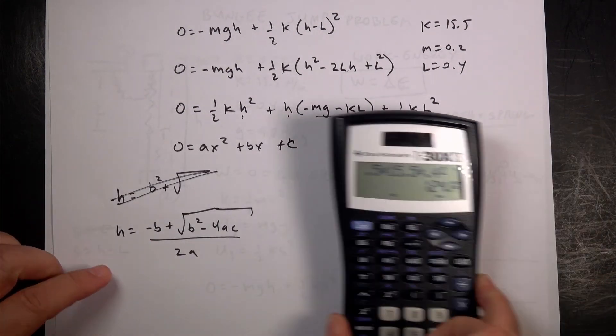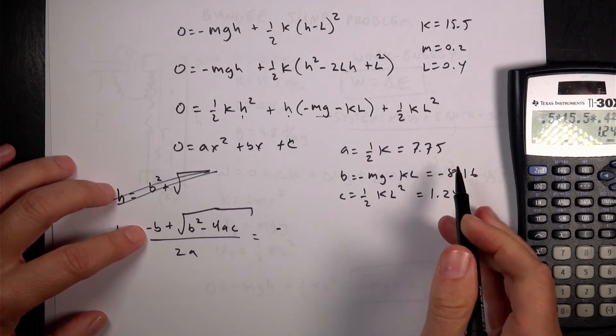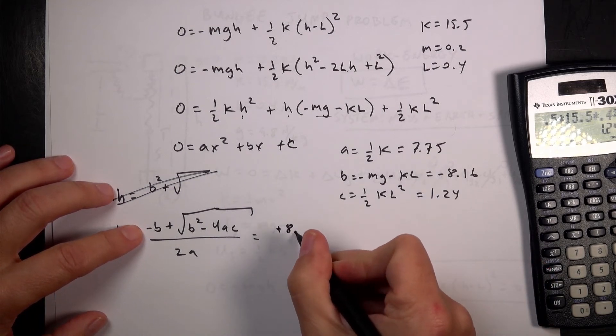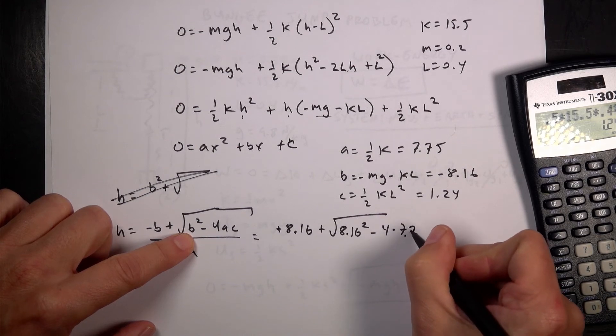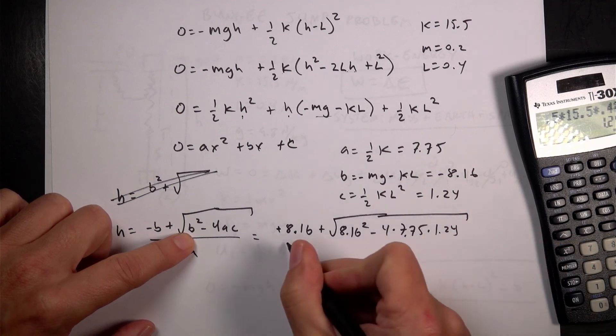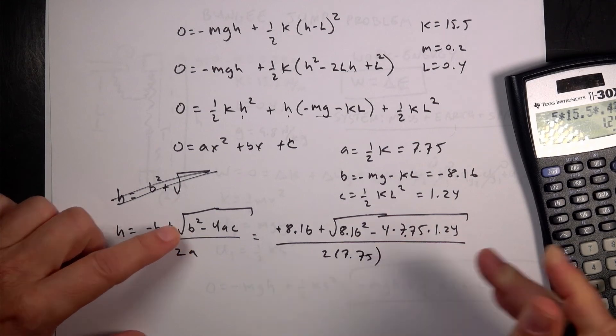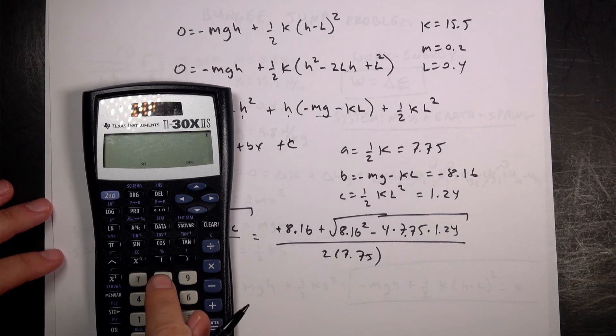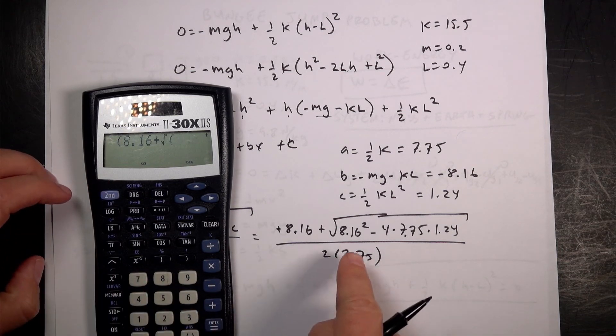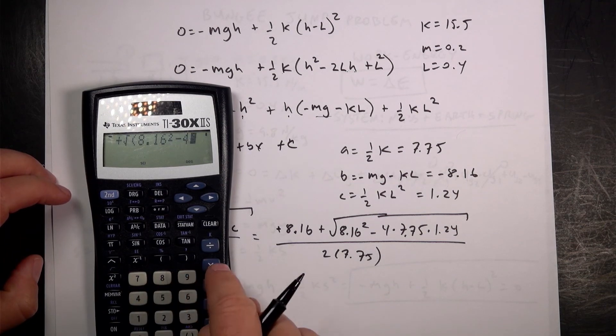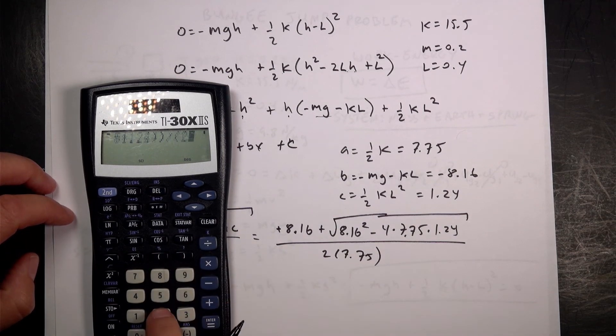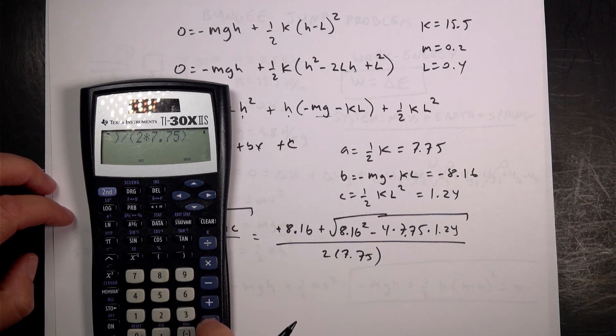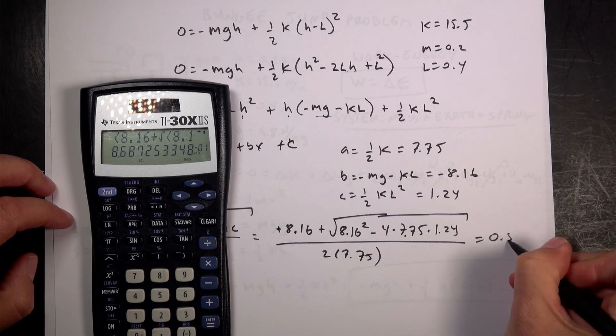So now I can do this thing. Let's just put in my numbers. So I get negative B, which is that's B. So I get plus 8.16 plus the square root of B squared, 8.16 squared, minus 4 times 7.75 times 1.24. All of that over 2 times A, which is 7.75. Let's do this in the calculator. 8.16 plus square root, 8.16 squared minus 4 times 7.75 times 1.24, closed parenthesis for the square root, closed parenthesis for the top, divided by 2 times 7.75, closed parenthesis equals 0.86 meters. And that's the answer.